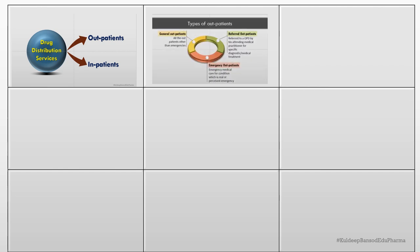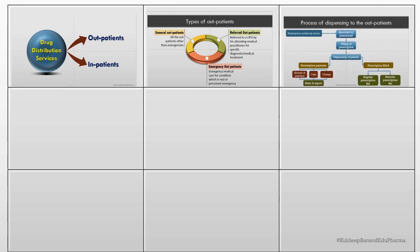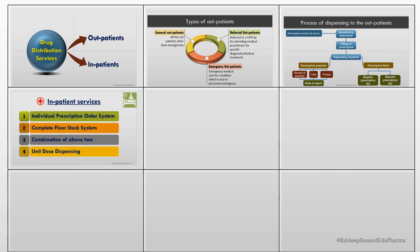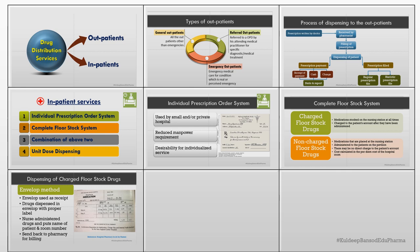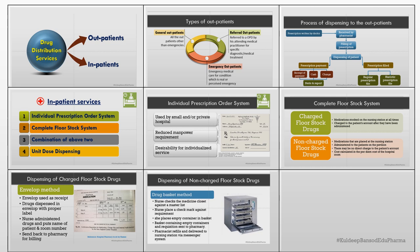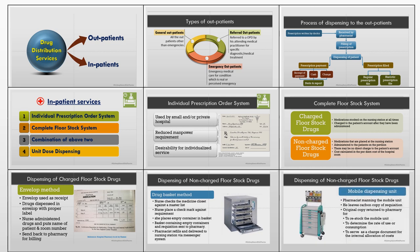Let's quickly recall what we covered in Part 1. There are drug distribution services for outpatients and inpatients. We discussed the types of outpatients and the process of dispensing to the outpatient — how the prescription is handled inside the pharmacy. We also discussed various methods of drug distribution to inpatients: individual prescription order system and complete floor stock system. The complete floor stock system charge is dispensed with the help of the envelope method, whereas non-charge is dispensed with the drug basket method and mobile dispensing unit.